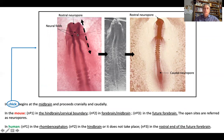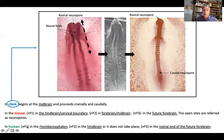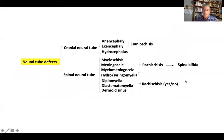The neural folds start to meet at one point. In chick embryos, they start to meet at the midline at the side of the midbrain, and they progress rostrally and caudally, so the rostral neuropore closes earlier than the caudal neuropore. In mice, closure takes place first at the hindbrain-cervical boundary, another location is at the forebrain-midbrain boundary, and a third location is in the future forebrain. In humans there are also three sites where these neural folds start to meet. This process may lead to neural tube defects, whether affecting the cranial or the spinal neural tube.